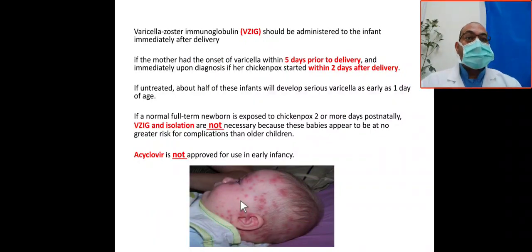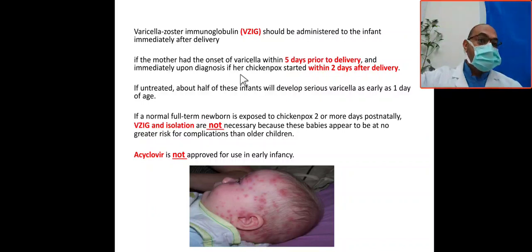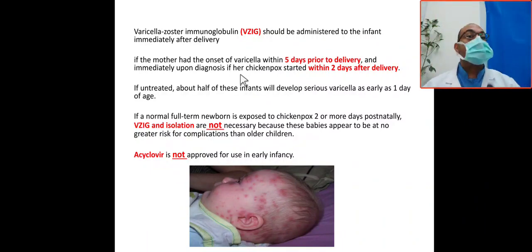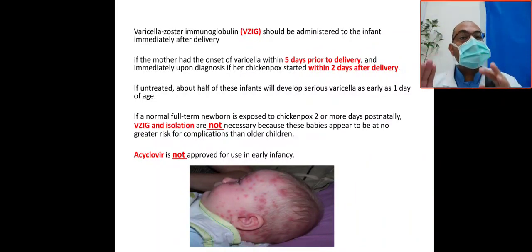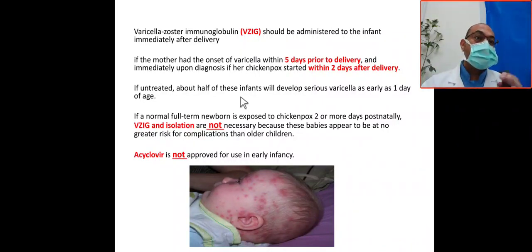Varicella zoster immunoglobulin should be administered to the infant immediately after delivery when the onset of maternal varicella is within five days before delivery, or immediately upon diagnosis if chickenpox started within two days after delivery. So five days before and two days after delivery — these are the indications for varicella zoster immunoglobulin.